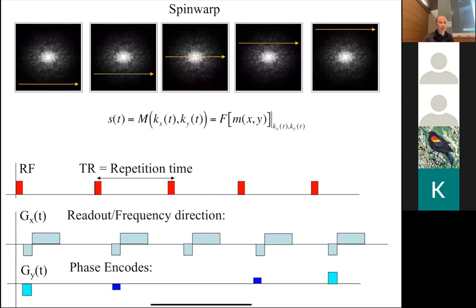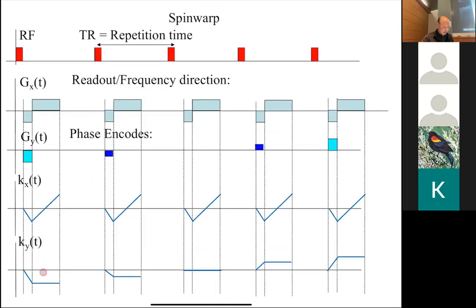Just to remind you where we are: the basic sequence in MRI is the spin warp pulse sequence. The MRI signal as a function of time is simply the Fourier transform of your object as you travel through KX and KY. In spin warp, we go line by line, collecting data in the Fourier domain. This is the basic pulse sequence with RF pulse, readout gradients, and phase encodes, showing the same trajectory through KX each time while KY steps to a different starting point.